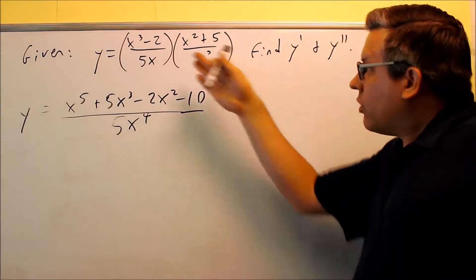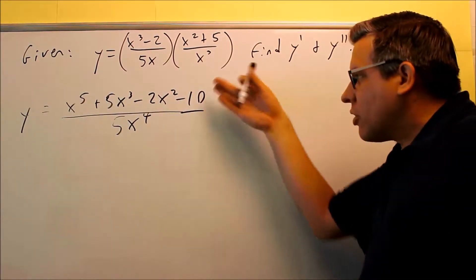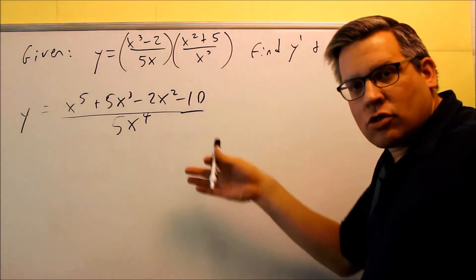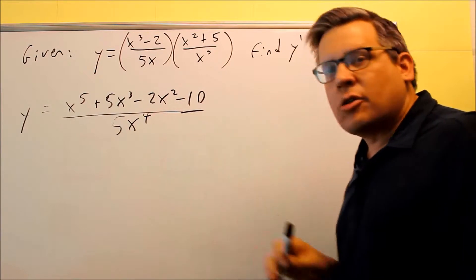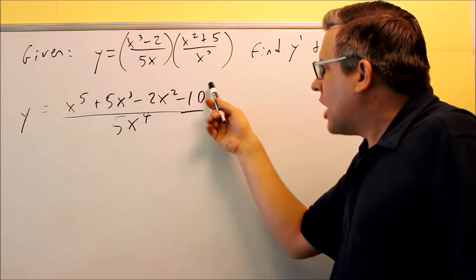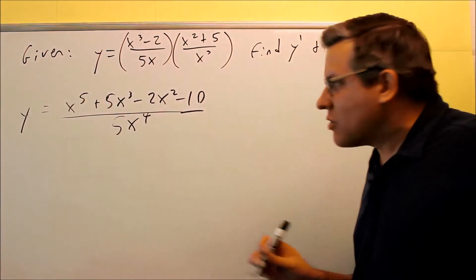Okay, so that's looking better. At least we got rid of the two different fractions. Now you could go ahead and jump in and do the quotient rule at this point, but let's simplify it further. Since we only have one term on the bottom, we can take all the different terms on top and divide them all separately by 5x to the fourth.